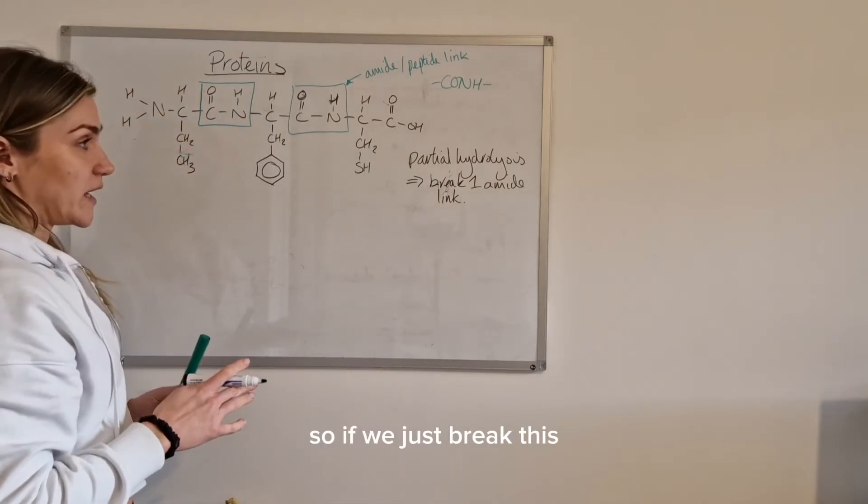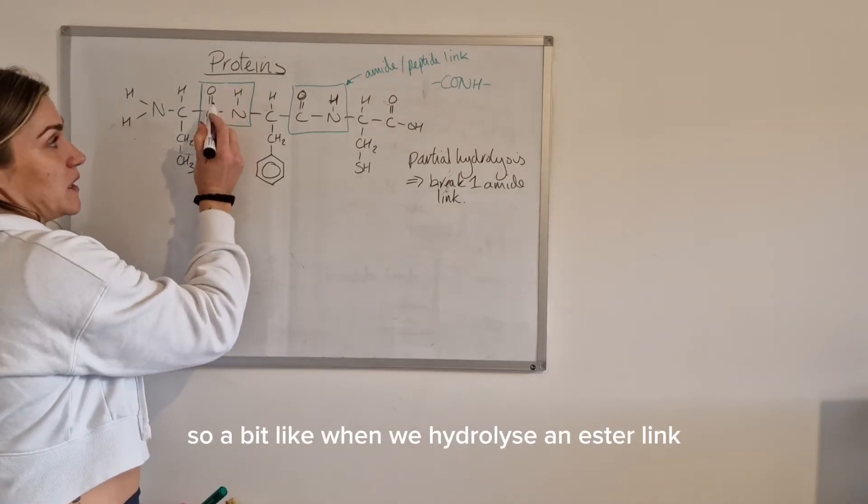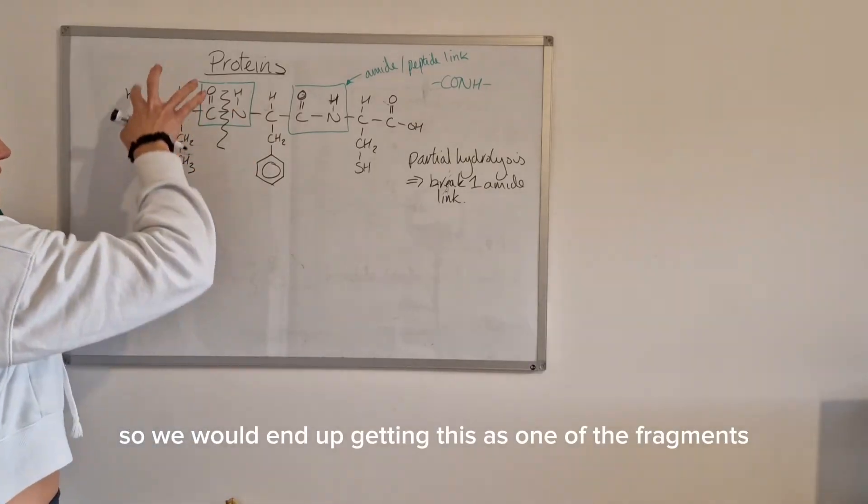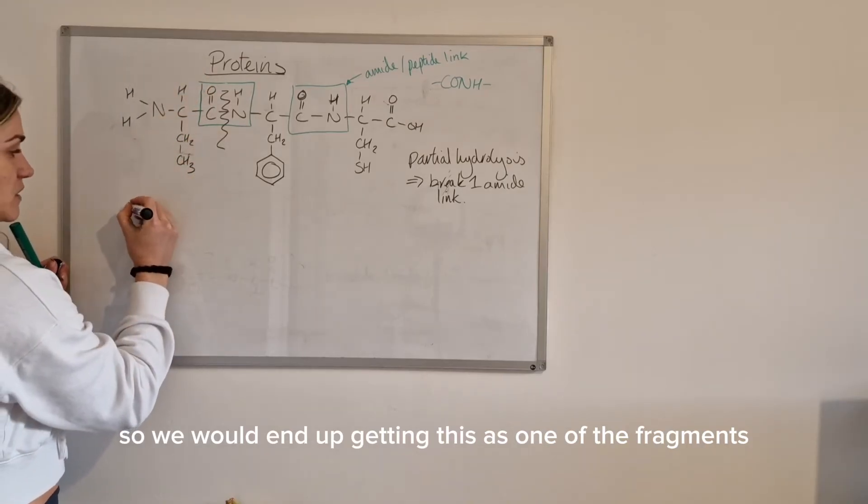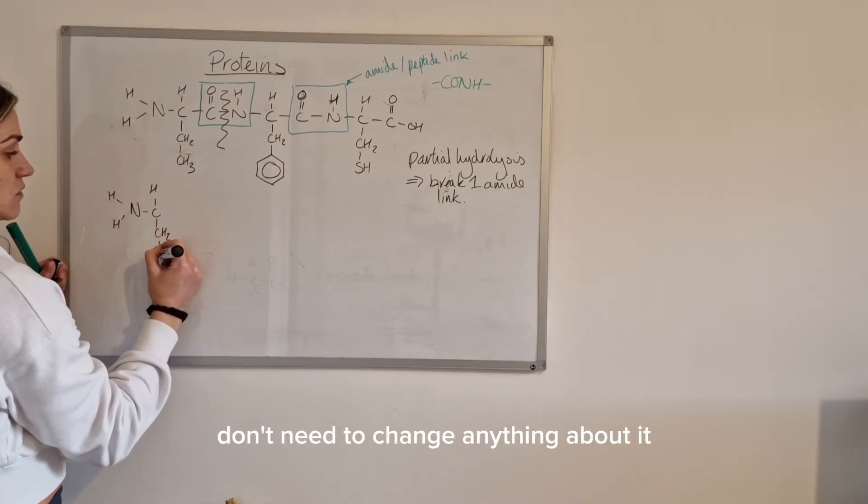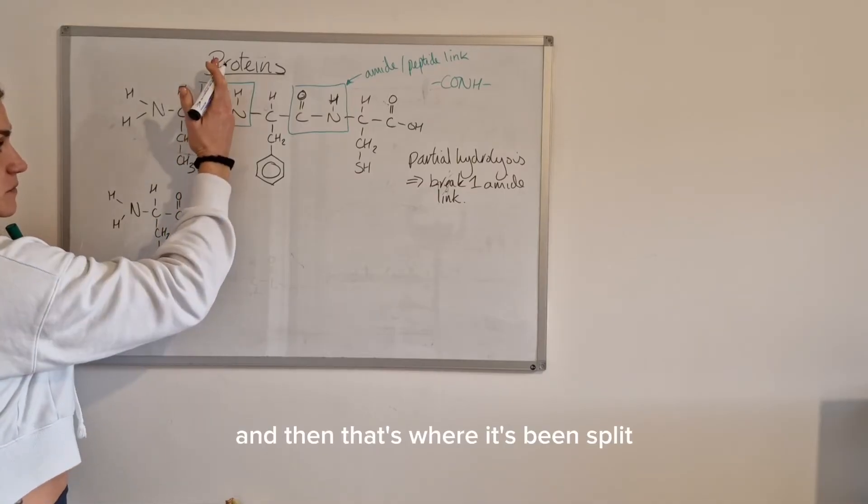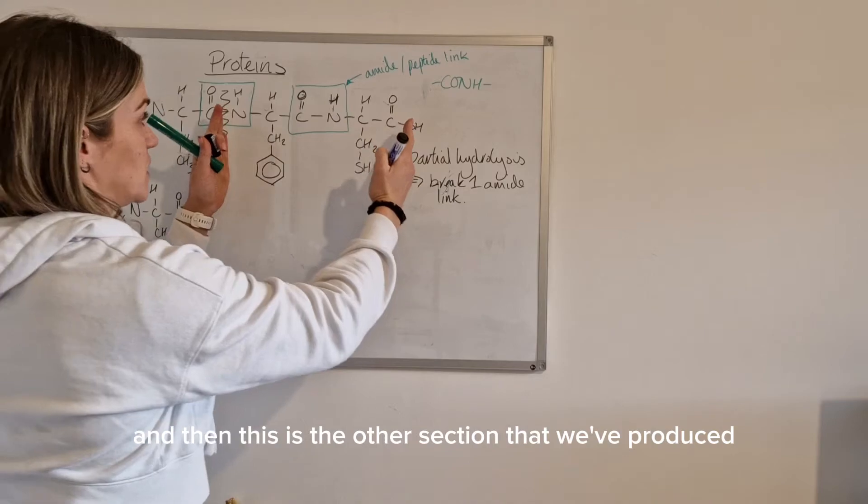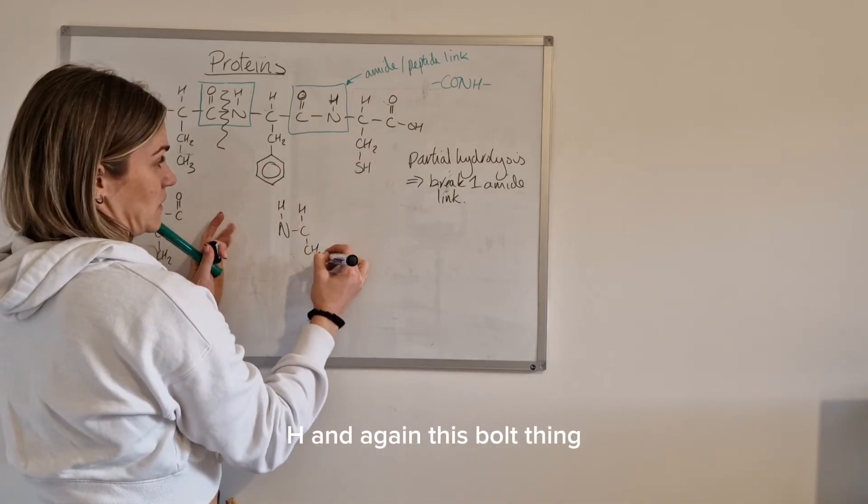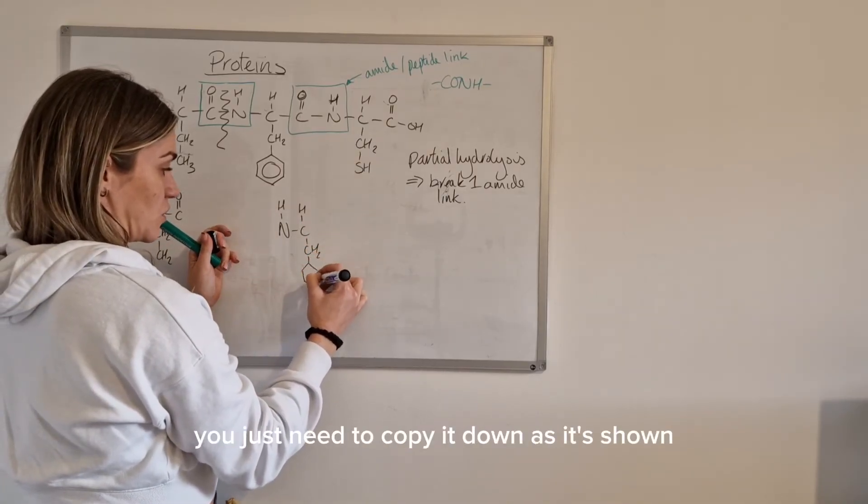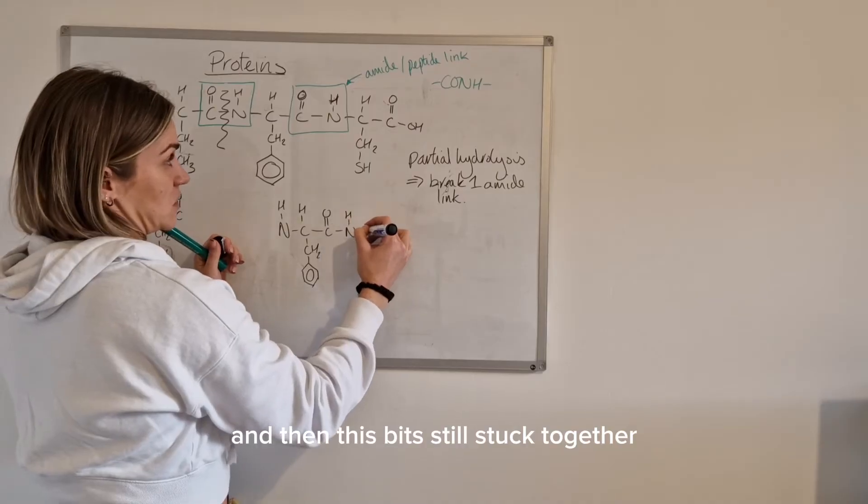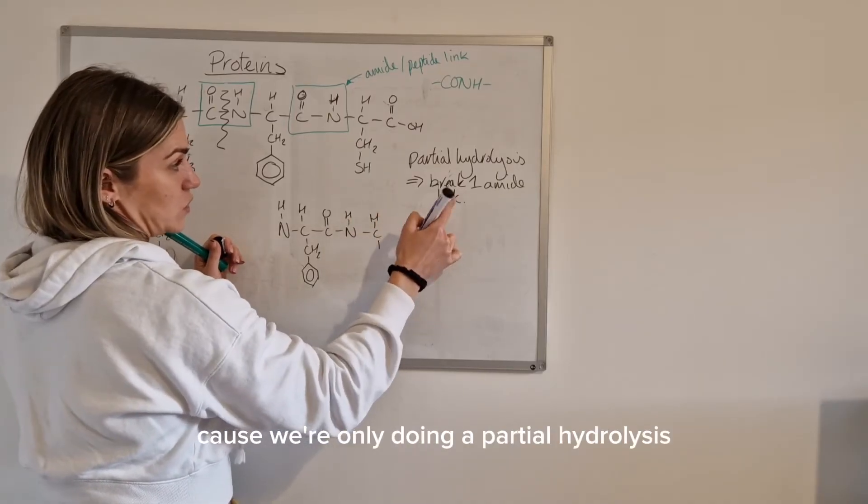So if we just break this amide link first, a bit like when we hydrolyze an ester link you just break it through the middle so that's where it would break. So we would end up getting this as one of the fragments so I just copy this out as it's written, don't need to change anything about it and then that's where it's been split so that's one part. And then this is the other section that we've produced so the NH-CH and again this block thing don't let it confuse you, you just need to copy it down as it's shown, it's just a ring of carbon and hydrogens. And then this bit's all still stuck together because we've not hydrolyzed that because we're only doing a partial hydrolysis.